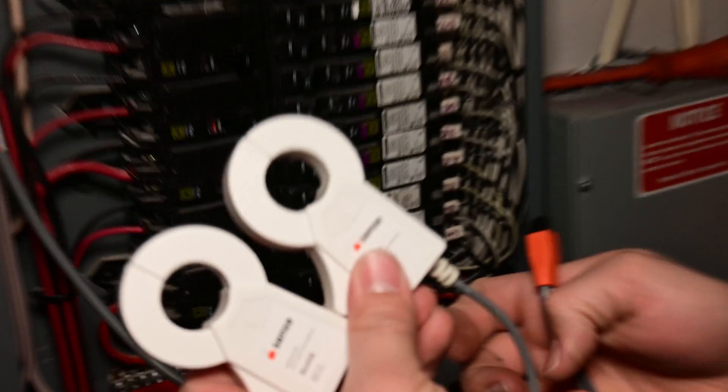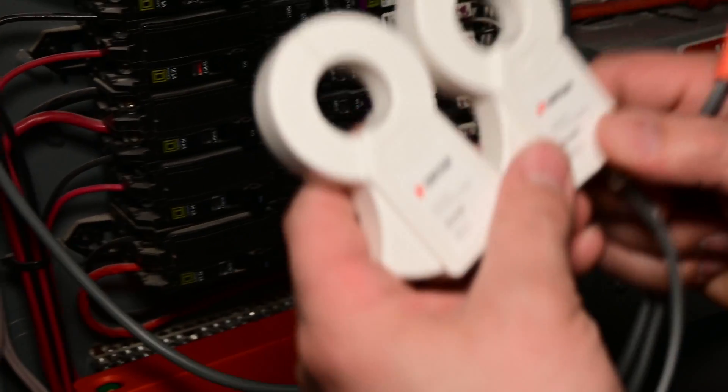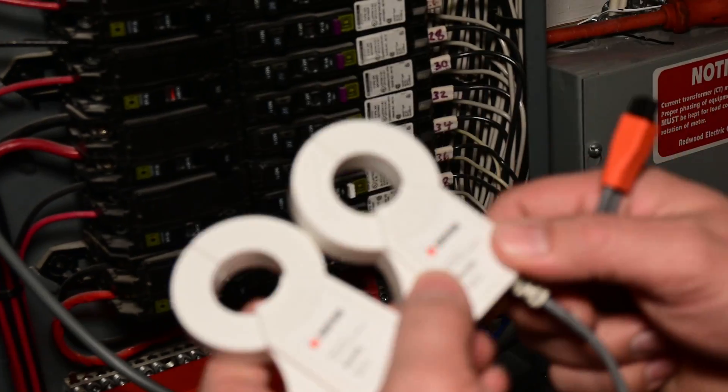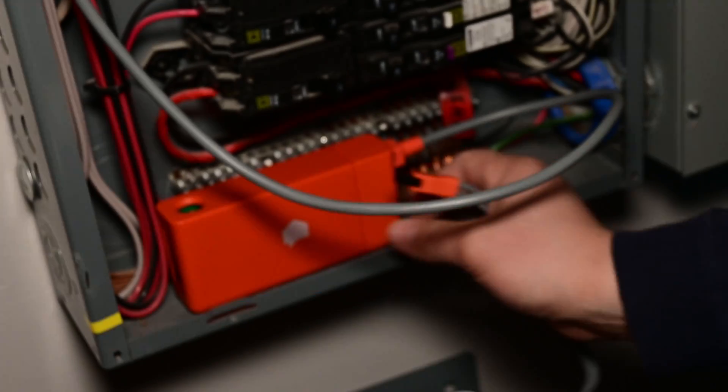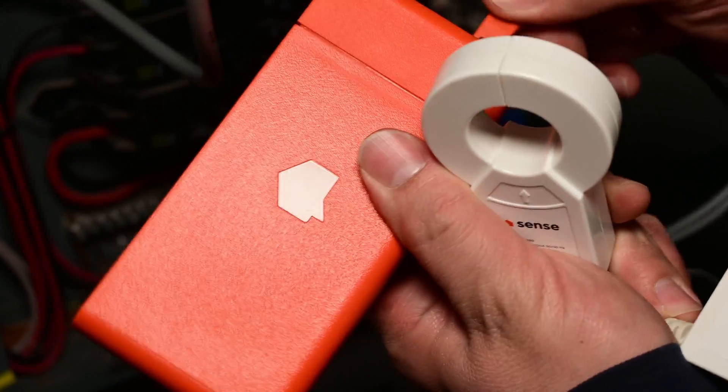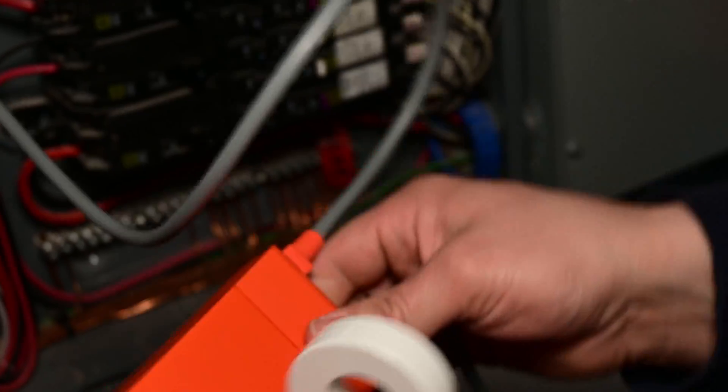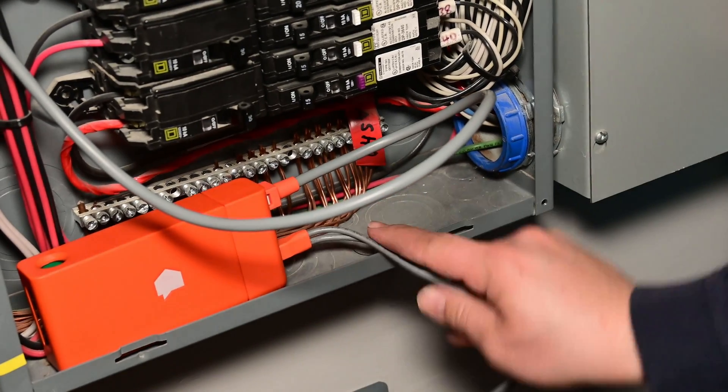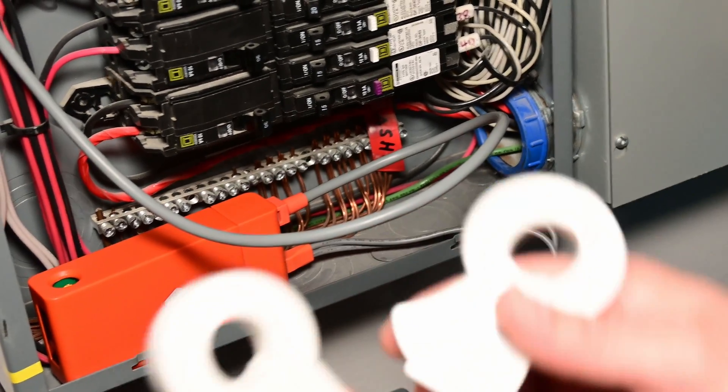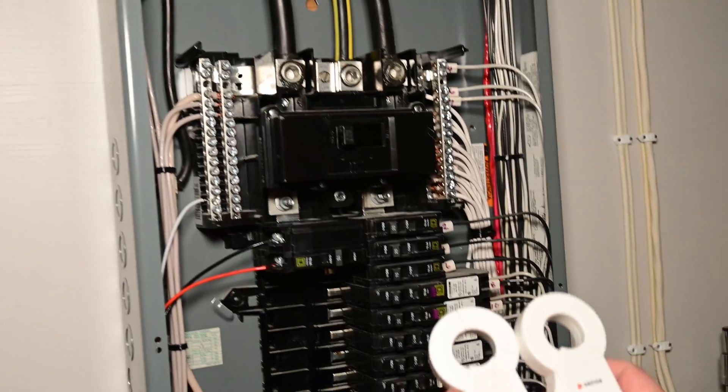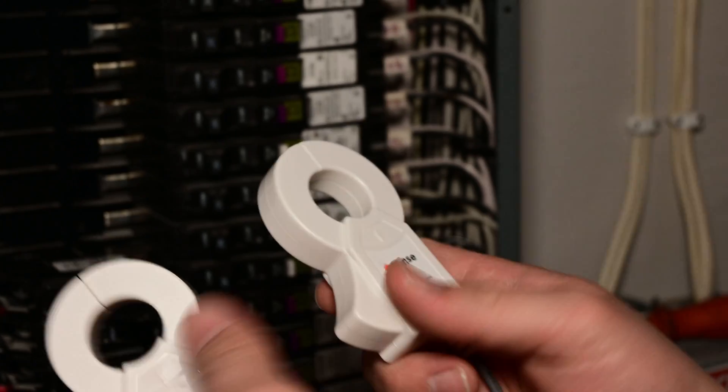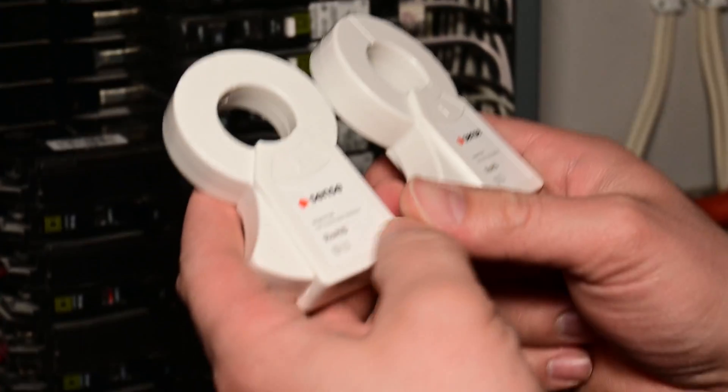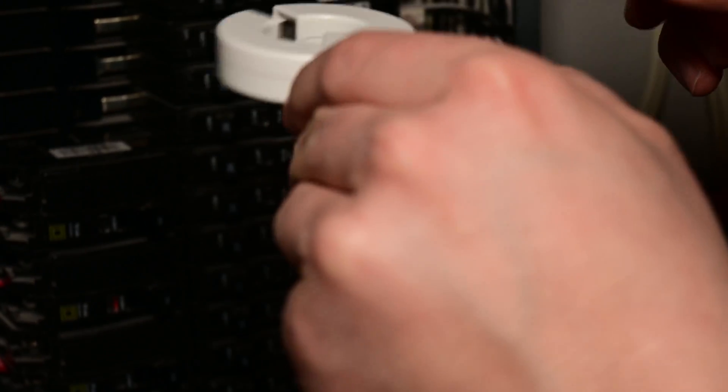Now we're going to install the amp meters themselves up on where the service cables come into your panel. But before we do that, we're going to connect them to the energy monitor for safety reasons, according to the instructions. I'm guessing it's just so that there's a path to ground that's connected while you are working with these. Now, you can see that they have these stickers on one side, and on the opposite side they do not. You just need to make sure that the side with stickers faces the same direction for both clamps, preferably up like this.